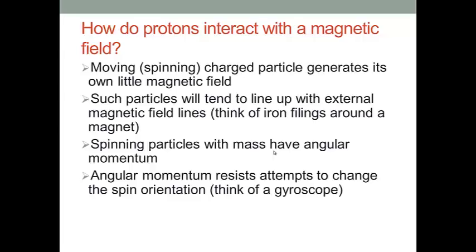The moving charged particle also generates its own little magnetic field. You can treat the moving charged particle as a magnet bar. So if there is an external magnetic field, then the same as the iron, they will line up with the external magnetic field. That's the basic thing we learned from high school.